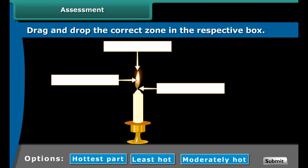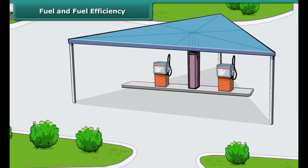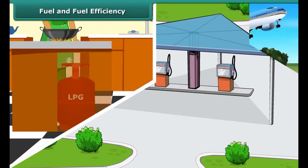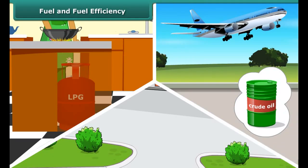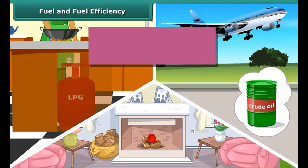All fuels do not burn efficiently. Fuel efficiency is determined by its calorific value. The amount of heat energy produced on complete combustion of 1 kg of a fuel is called its calorific value, and it is expressed in kilojoules per kg. The calorific value of LPG is more than wood or coal, which is why LPG is a more efficient fuel.